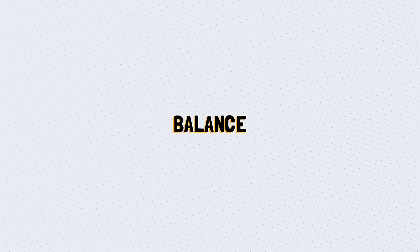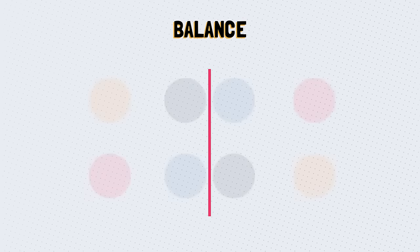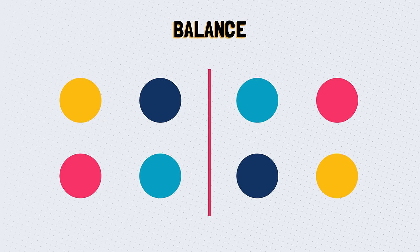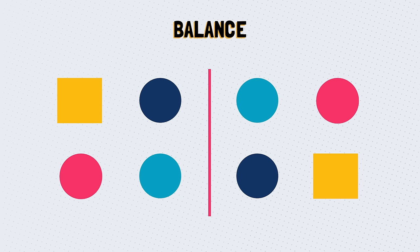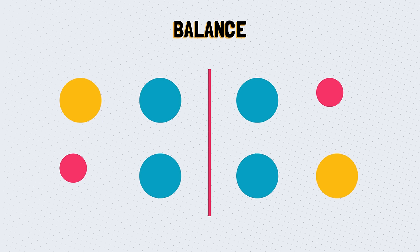Next up, we have balance. Balance is any element placed on a page that has a visual weight that can be affected by form, size, color, and texture. In order to make a layout balanced, some elements might need to have a certain scale.